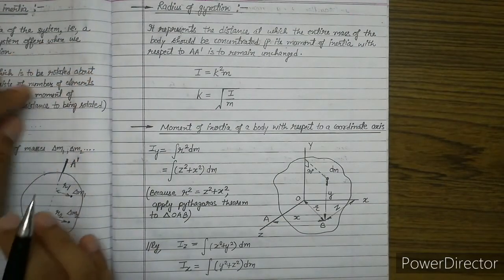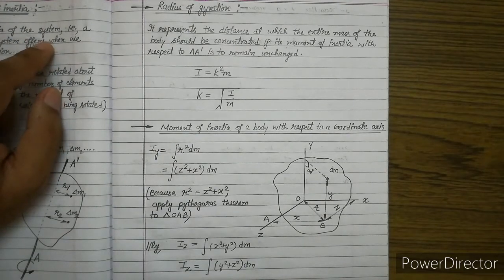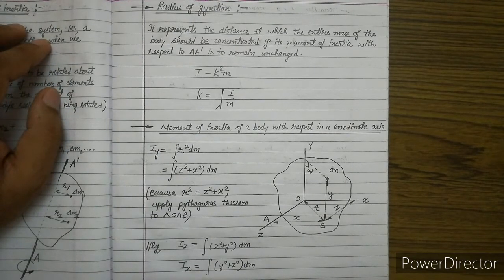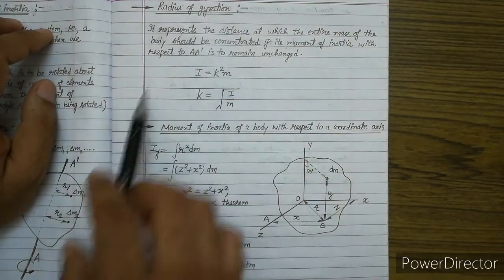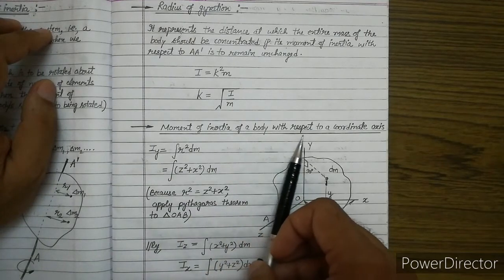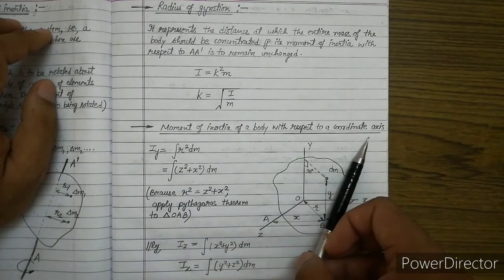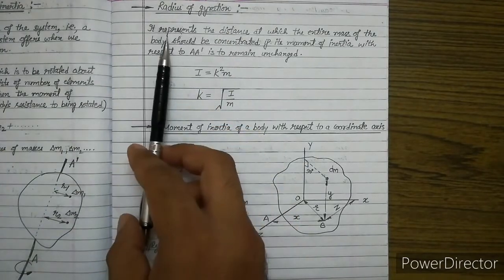Hello students, good morning. In the last video lecture we discussed mass moment of inertia — its equation and its unit. Today we will discuss two topics: the first is related to radius of gyration, and the second is related to moment of inertia of a body with respect to a coordinate axis. Let us first talk about what is radius of gyration.